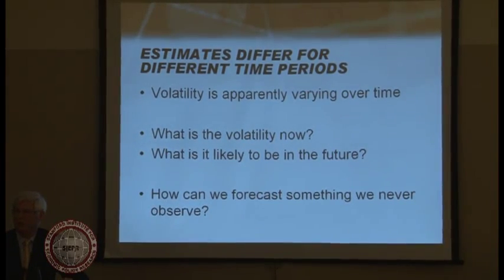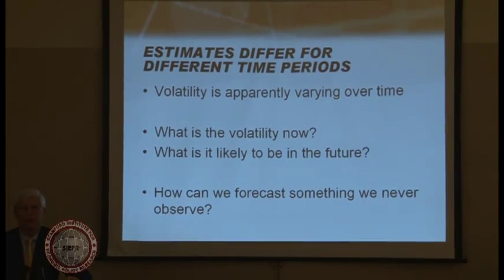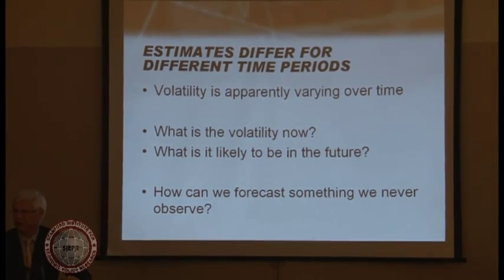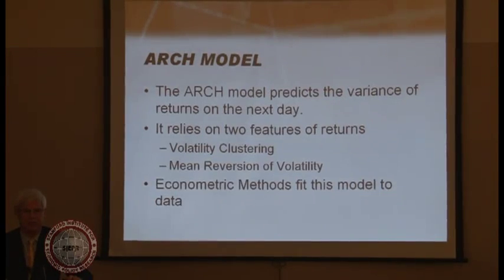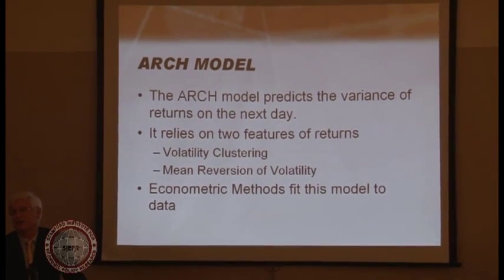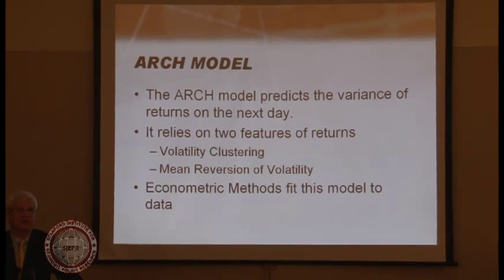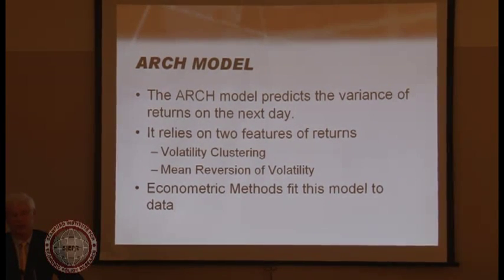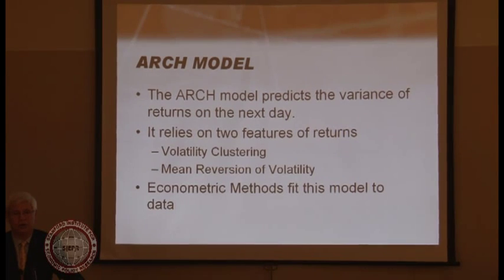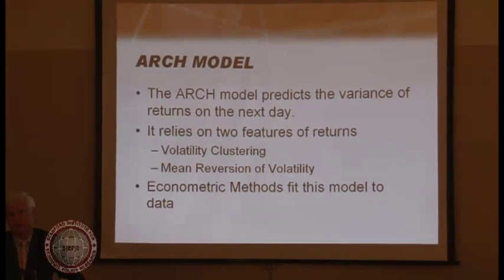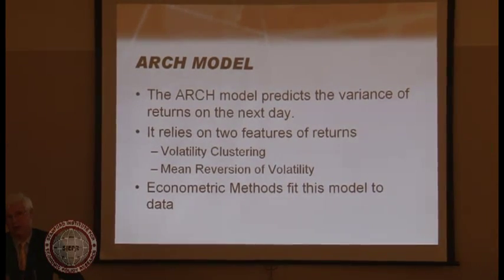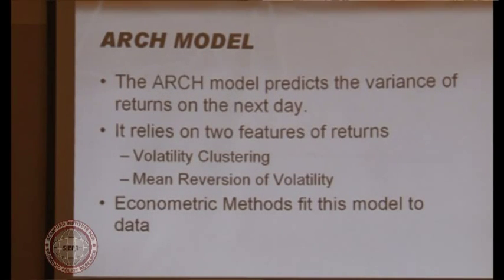When we think about that, the question is: how do we predict something that we don't actually ever really observe? Can we formulate that as a real problem? That is, in fact, the problem that the ARCH model is designed to solve. ARCH stands for autoregressive conditional heteroscedasticity — and you can see why we call it the ARCH model, because you wouldn't want to go through all that. Only if you're a PhD student do you really have to be able to spit that out.